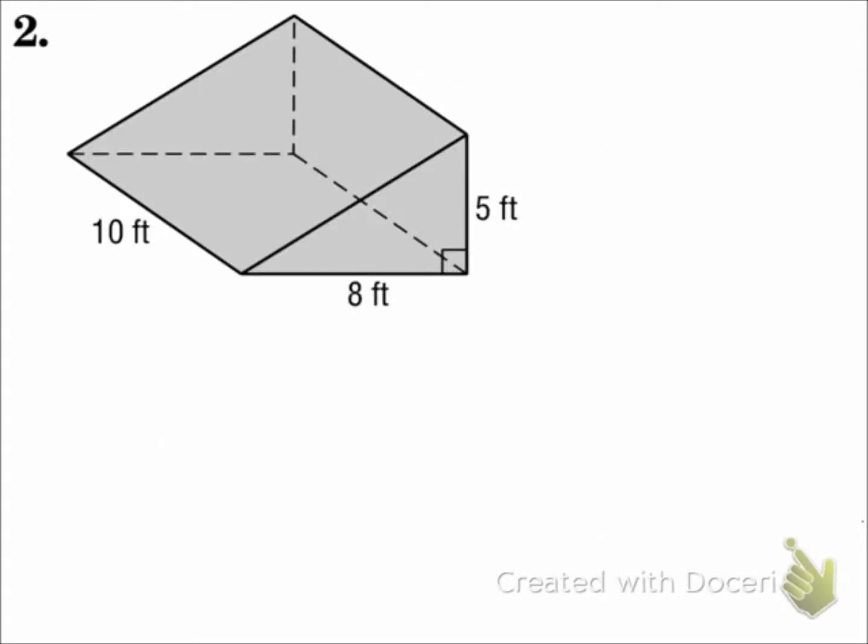Here we have a triangular prism. For the lateral area, we'll use the formula L equals pH, where P is the perimeter of the base and H is the height of the prism. The base is a triangle, so we need the perimeter of that triangle.